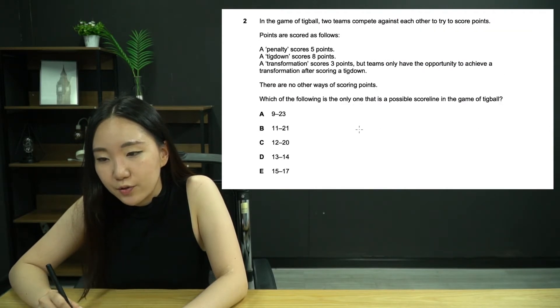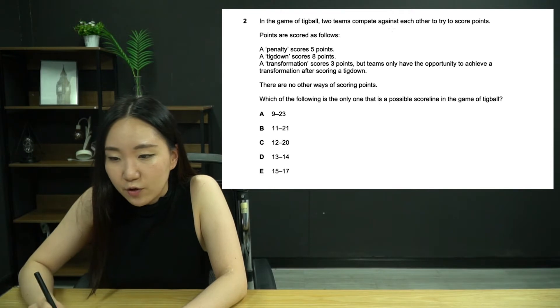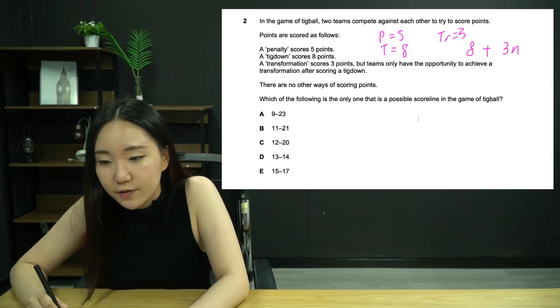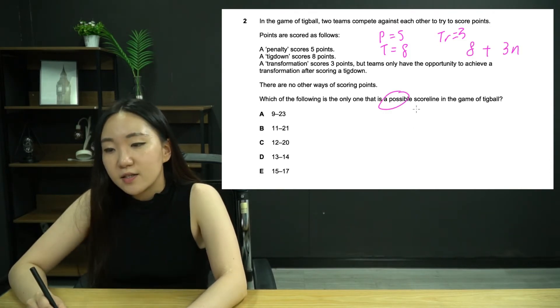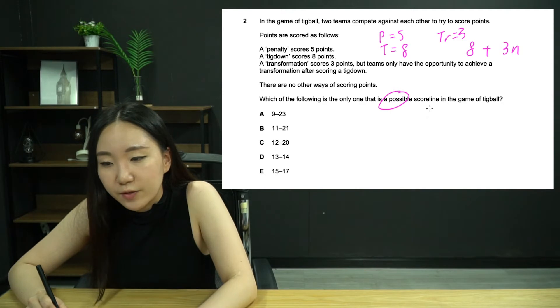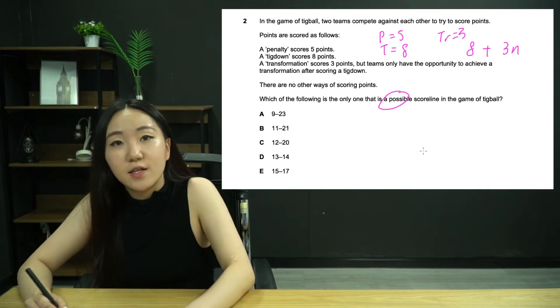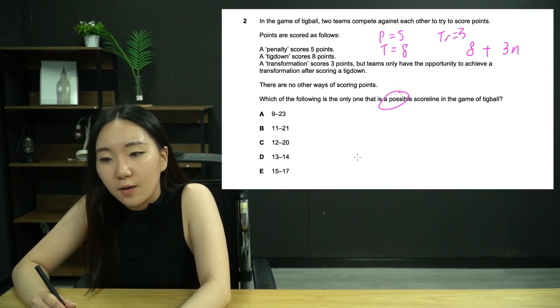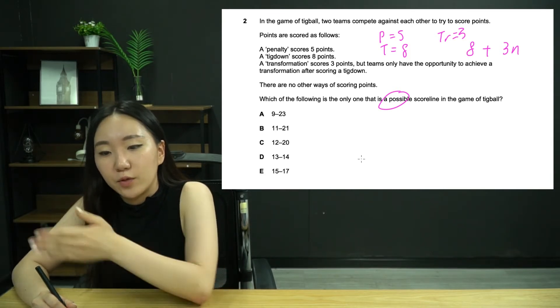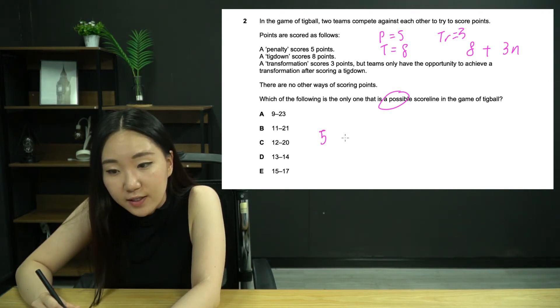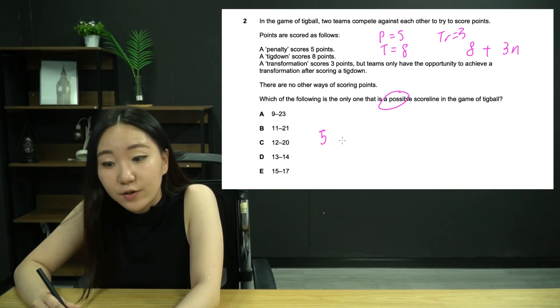Number two. In the game of tig ball, two teams compete against each other to try to score points. A penalty is five points, a tig down is eight points, and a transformation is three points. However, to get a transformation, you must have a tig down. So which of the following is the only one that is possible? This is one of the key moments where people may lose silly marks when you see possible or not possible.